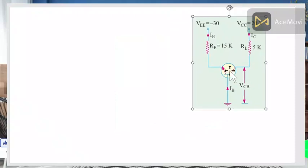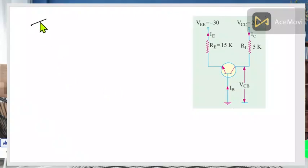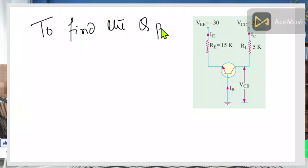Let us start the topic with an example of a given circuit to better understand what is going on and what we are required to do. Suppose you are provided a circuit and you are asked to obtain the operating point and draw the DC load line. You can call the operating point the Q-point or working point.